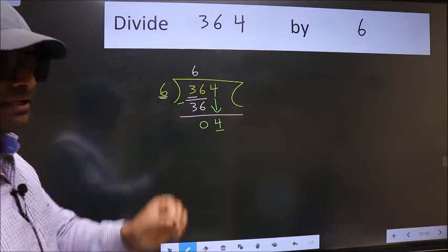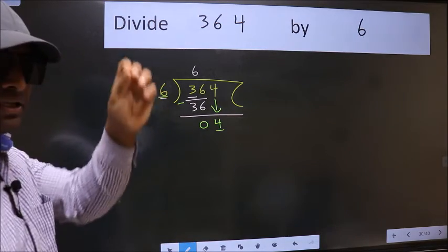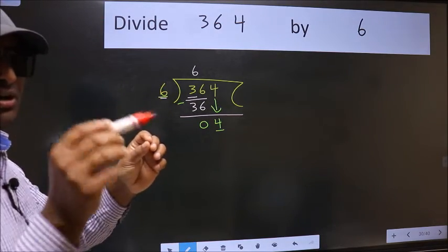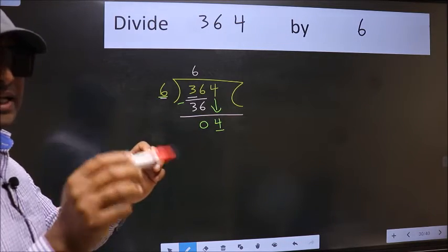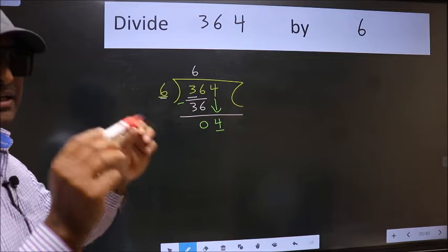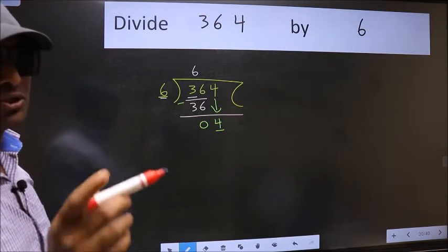I repeat: bring down the number and also put a dot and take 0, both at the same step. You should not do this.